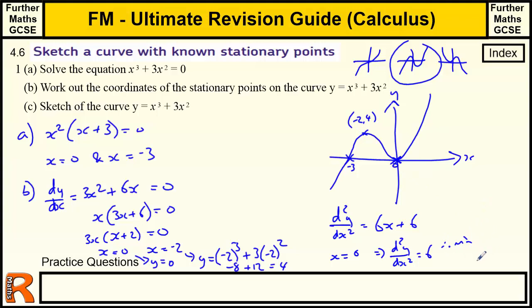And when x = -2, d²y/dx² is going to be -12 + 6, which is -6, which is a maximum. So that's a maximum. And that's what we had. So that's the sketch.